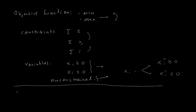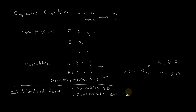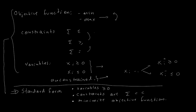Sometimes it's good to transform the problem into an equivalent version. In this case, the problem is called standard form. A problem is in standard form if it satisfies that all variables are non-negative, all constraints are equations, and the objective function is to minimize. Given a problem with any of these kinds of constraints and objective functions, we can always transform it into standard form.